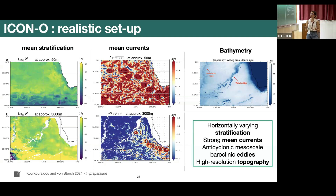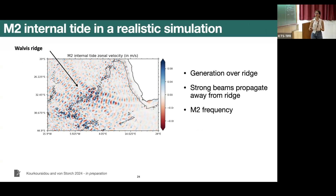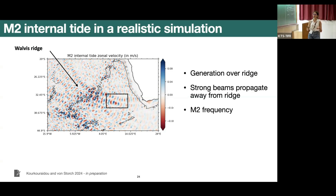On the methodology: first we extract the M2 internal tide by depth-averaging the velocities and subtracting them from the full model velocities to remove the barotropic component. Then we do harmonic analysis to extract the M2 frequency — the most dominant semi-diurnal tide in the southeast Atlantic. This gives us the M2 internal tide zonal velocity in the focus area, with nice strong beams propagating away from the Walvis Ridge in all directions. We focus on a smaller area and one beam generated at the ridge that propagates eastward toward Africa.